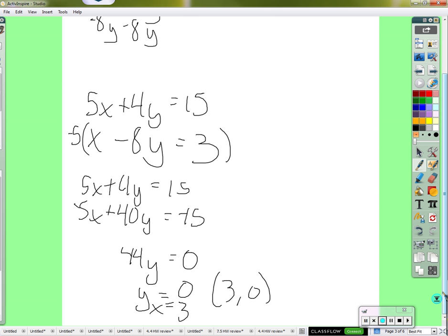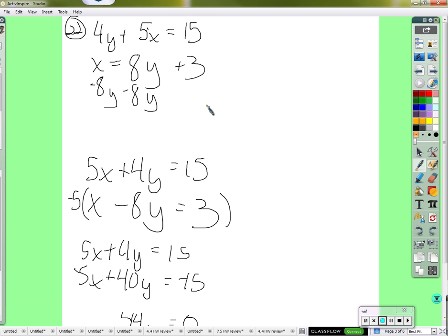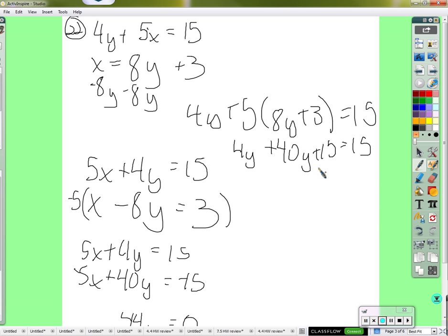We have x equals 3. So yes, 3, 0. We find the exact same solution if we instead use substitution. So I'll put this stuff here in for x in this equation. 4y plus 5 times 8y plus 3 equals 15. Distributing the 5, we get 4y plus 40y plus 15 equals 15. We'll subtract 15 from both sides. 44y equals 0. Plug it in and find, again, x is 3. Which is what I said would happen. I said we'll get the same solution if we use substitution, if we use elimination. If we were to graph them, we would find that they intersect at 3, 0.